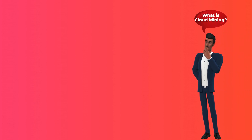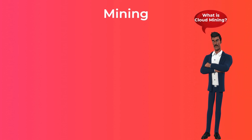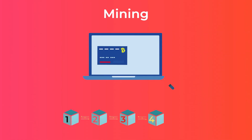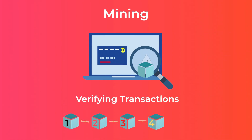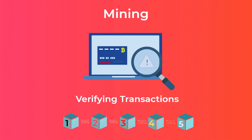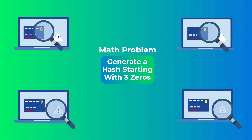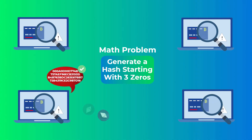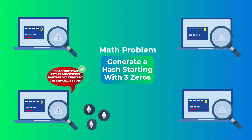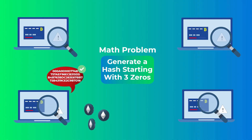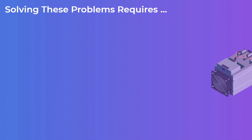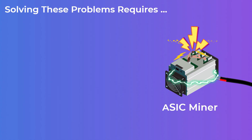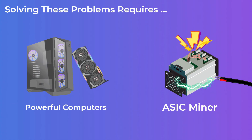To be able to understand cloud mining, you first need to understand what mining is in the first place. Mining is the process of verifying transactions and adding new blocks to the blockchain. All miners on the network are trying to solve a very complex mathematical problem, and the one that solves it first gets rewarded with crypto, which is the profit you make as a miner. Solving this problem requires specific devices called ASIC miners, or at least very powerful computers.